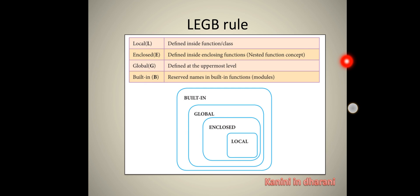Local is defined as a class or function — the function defines a local scope. A nested function is enclosed scope. Global scope is defined at the most outer level. Built-in functions are external — those are reserved names. Local is inside the function, E is above the nested function, G is above that at the global level, and B is built-in at the uppermost level.